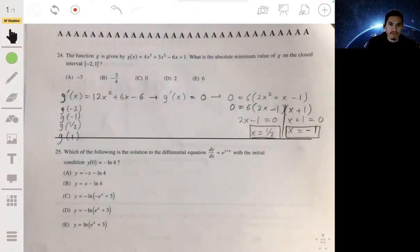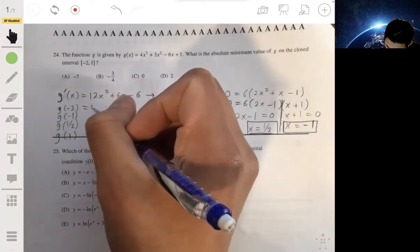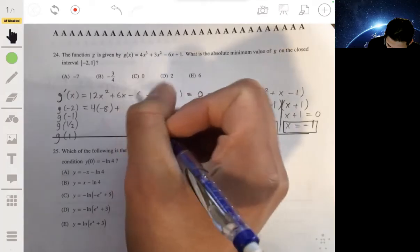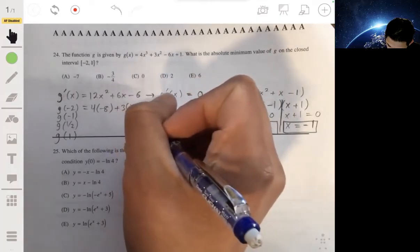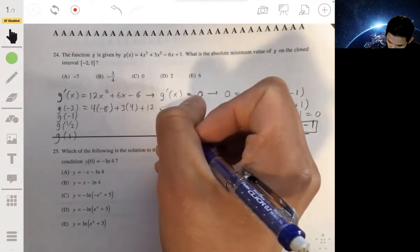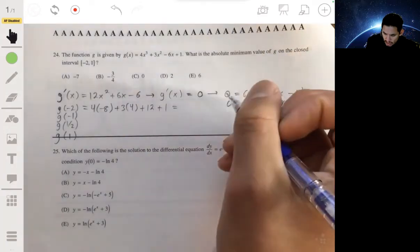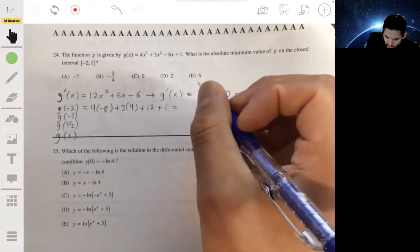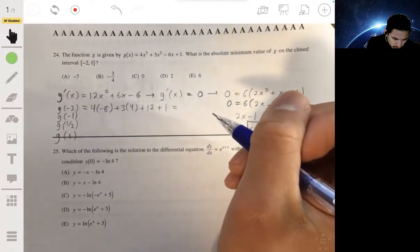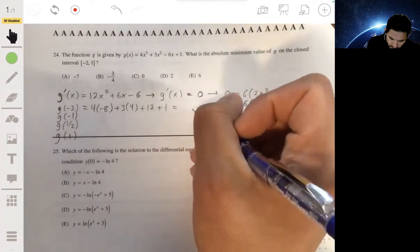g of negative 2: four times negative 8 plus three times 4 plus 12 plus 1, so negative 32 plus 24 plus 20, so negative 7.